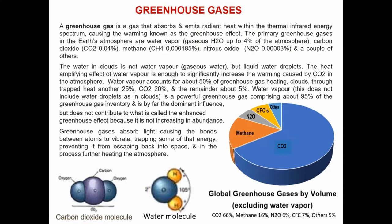Greenhouse gases absorb light causing the bonds between atoms to vibrate, trapping some of that energy, preventing it from escaping back into space and in the process further heating the atmosphere.